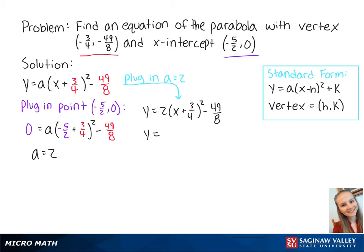This becomes y equals 2 times (x squared + 6/4 x + 9/16) minus 49/8. This finally gets us y equals 2x squared plus 3x minus 5. This is the final answer.